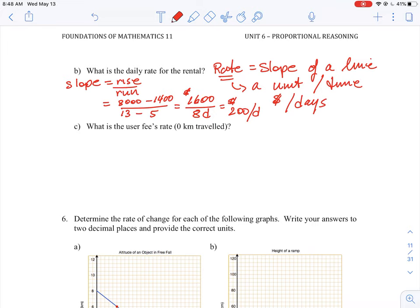It doesn't matter which two points you pick. If it's a straight line, the slope will always be constant. So that's how that question would go.